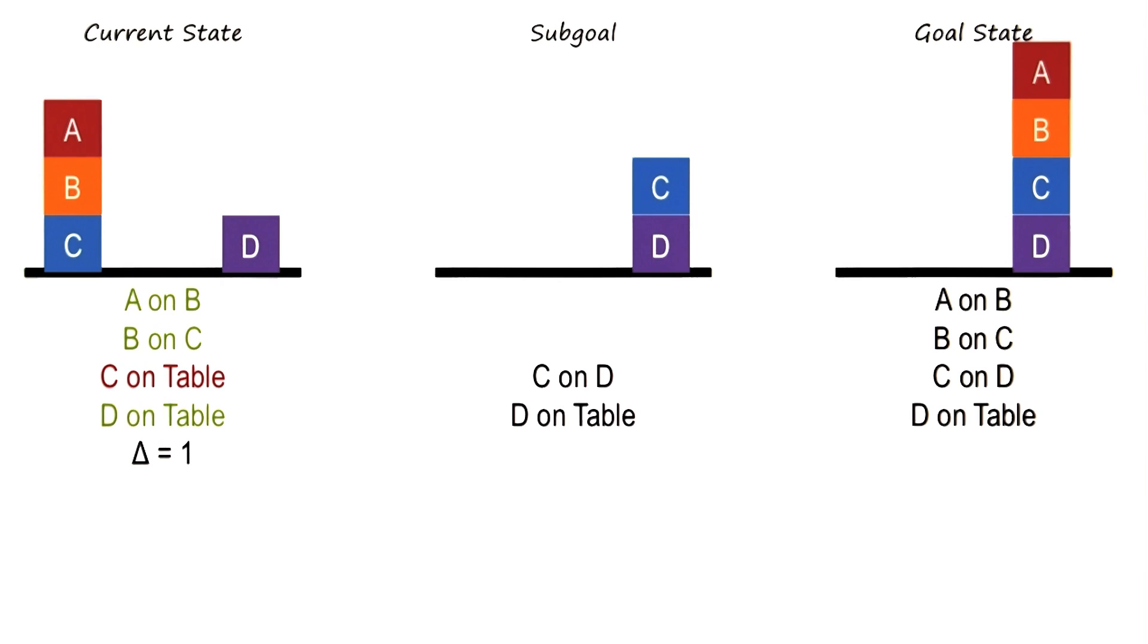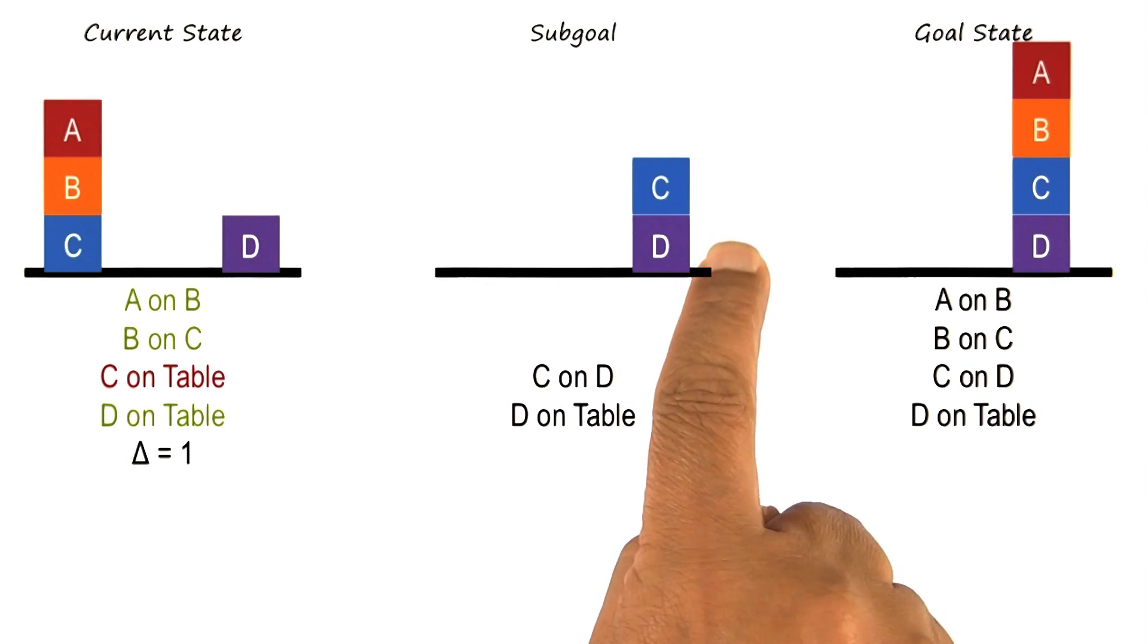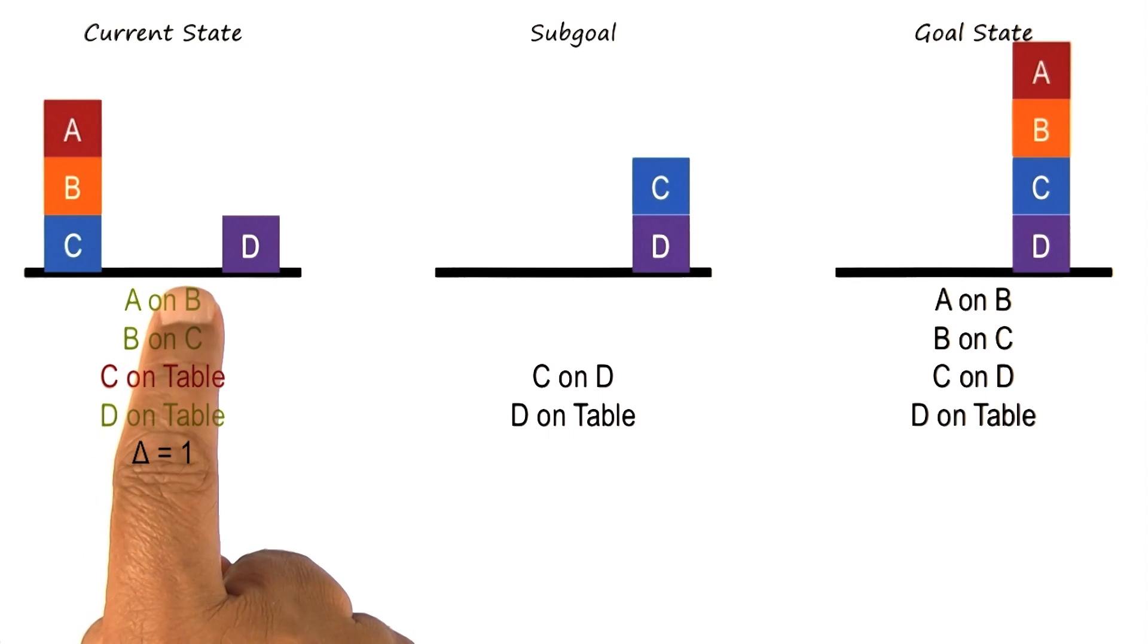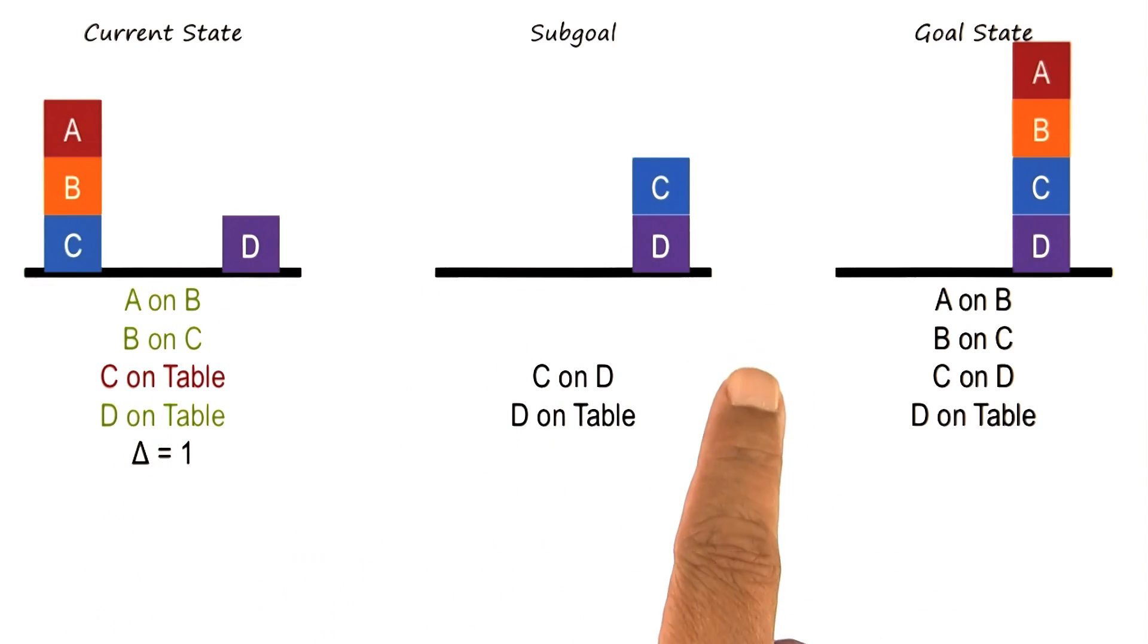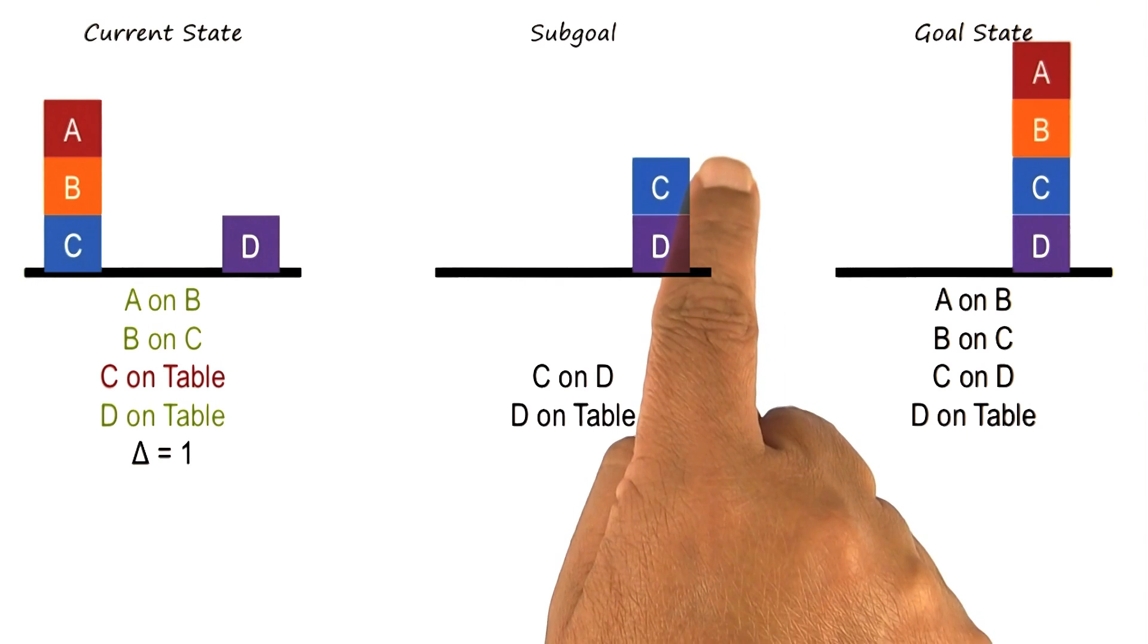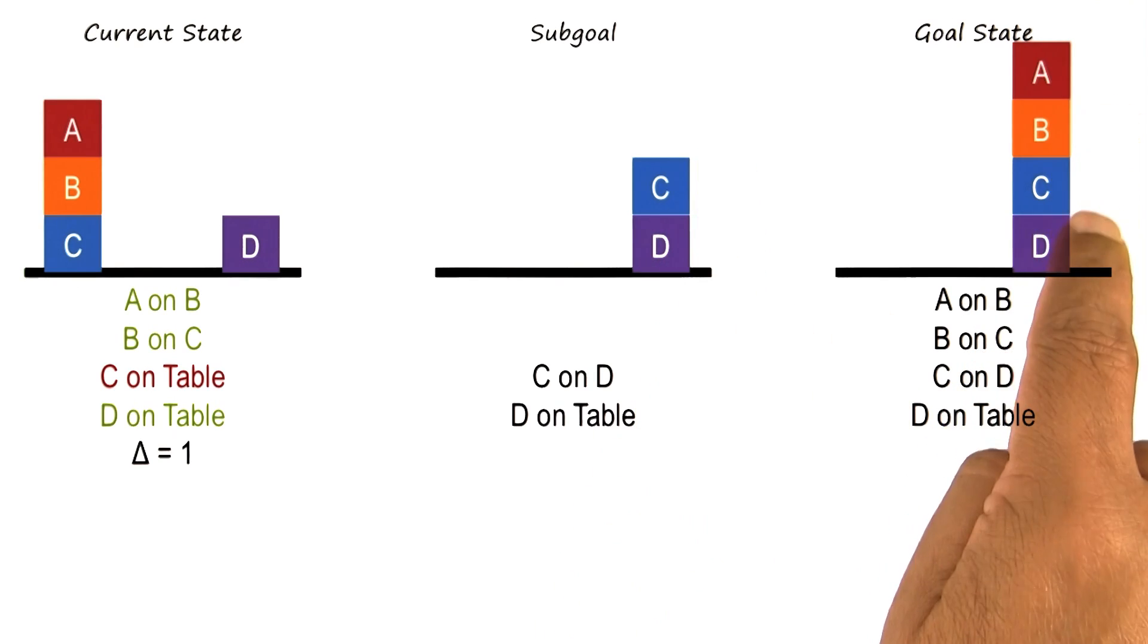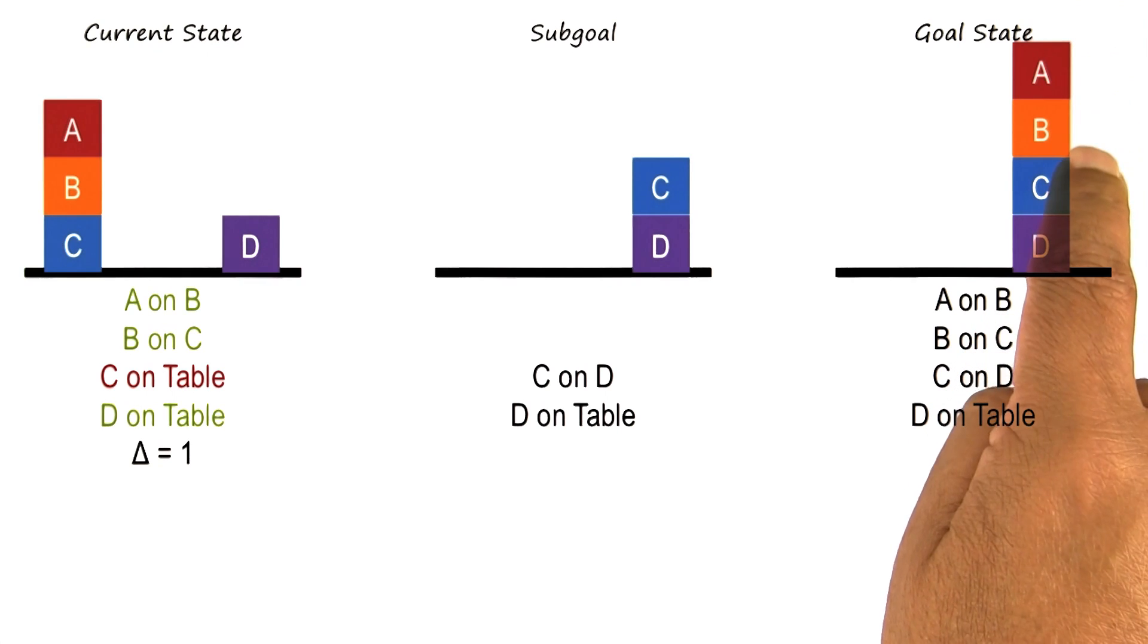Let us suppose that we pick this sub goal C on top of D. Given that sub goal, we can now start from this current state and try to achieve this sub goal. Now, of course, one might ask the question, why did we pick the goal C over D and not the goal B over C or the goal A over B?